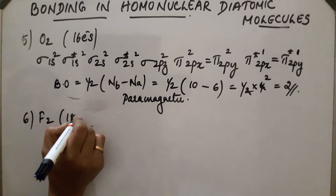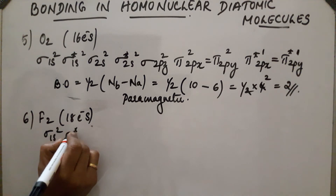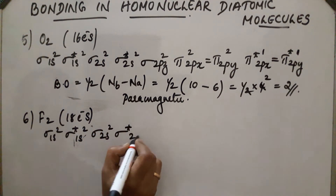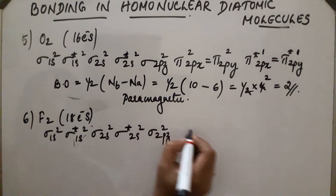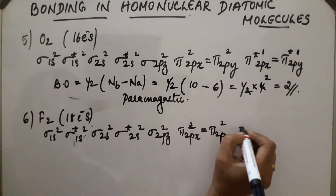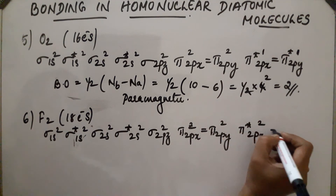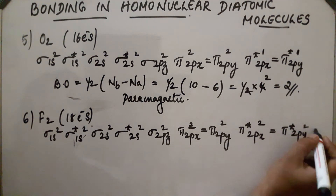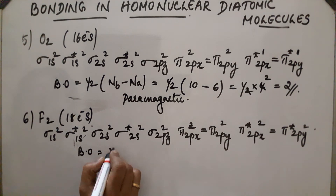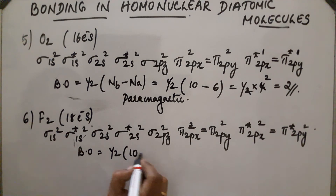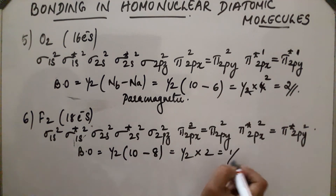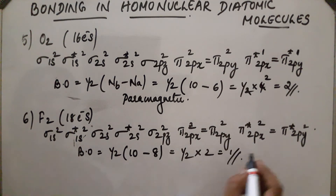Next is F₂, with 18 electrons. Its configuration is sigma 1s², sigma star 1s², sigma 2s², sigma star 2s². It is diamagnetic because there are no unpaired electrons. Bond order = 1/2 into (10 minus 8) = 1/2 into 2 = 1. So the bond is a single bond and the compound is diamagnetic.